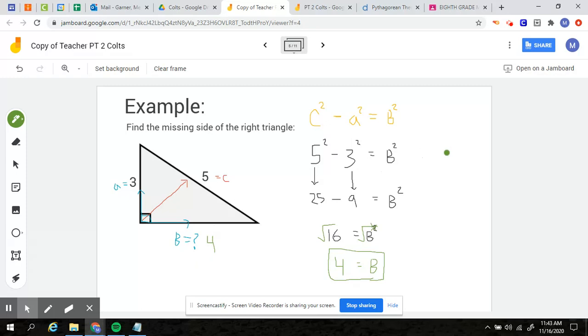All right. So the big difference, guys, last week when we were given the two legs, we took their squares and then added them together before taking the square root. This week, since we're given the hypotenuse, we're going to do the hypotenuse squared minus the leg squared. And then same as last week, take that square root.